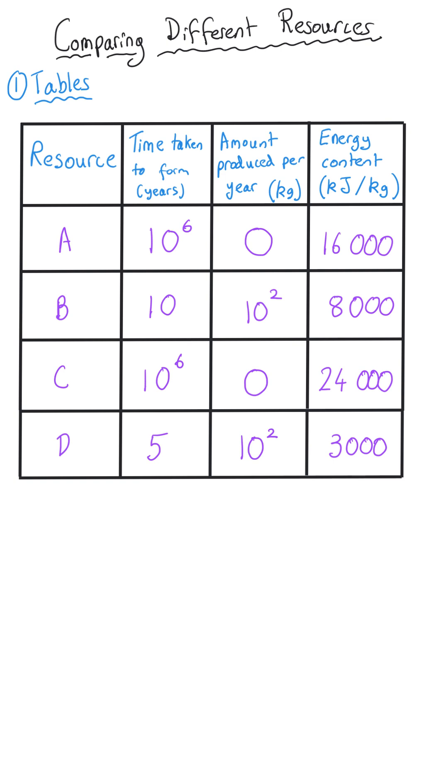So what we've got here is a table where I've listed four different resources A, B, C, D.